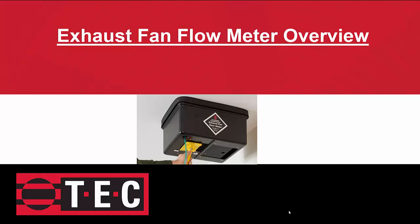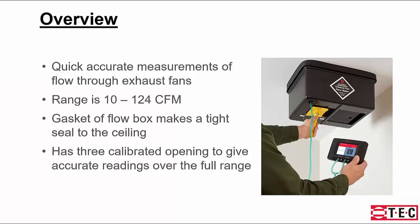This is an overview of our exhaust fan flow meter. It is designed to give you quick, accurate measurements of flow through exhaust fans. The range is from 10 to 124 CFM, and the gasket on the top of the box makes a tight seal against the ceiling.